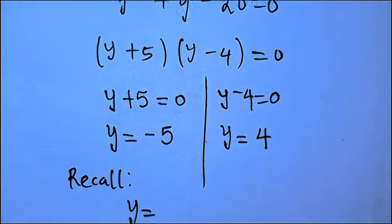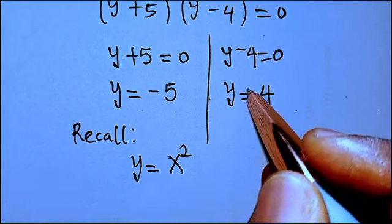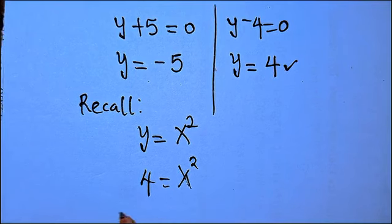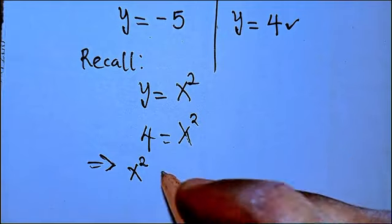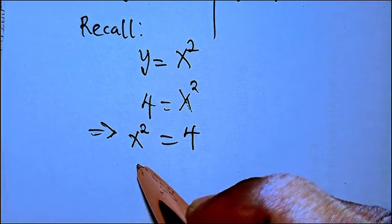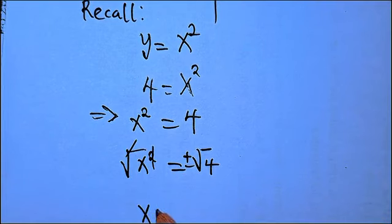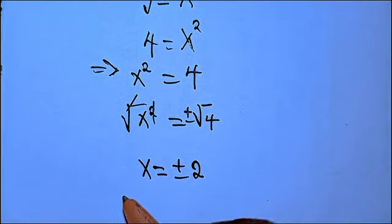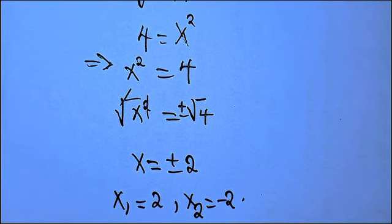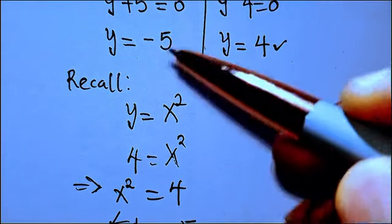Don't forget that y equals x squared. So when y equals 4, we have x squared equals 4. Taking the square root of both sides gives x equals plus or minus 2. So x₁ equals 2 and x₂ equals minus 2. Now we go for the other value of y, which is y equals minus 5.